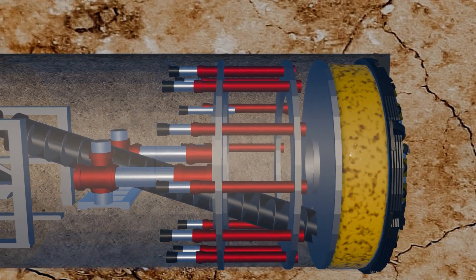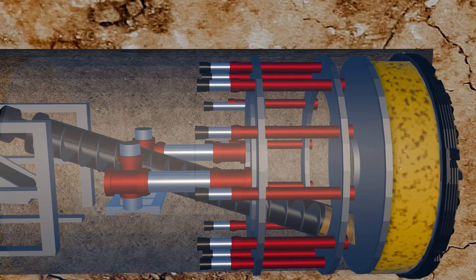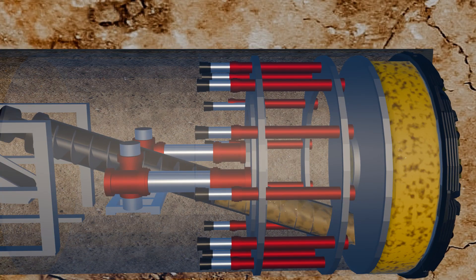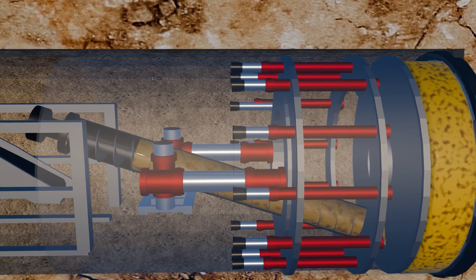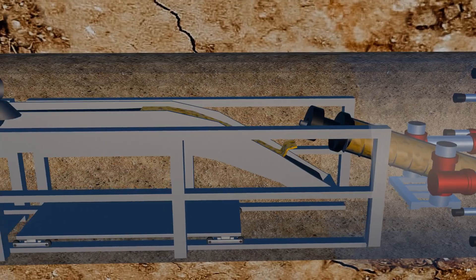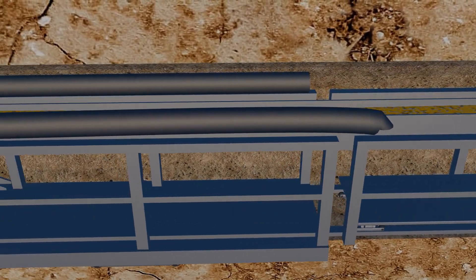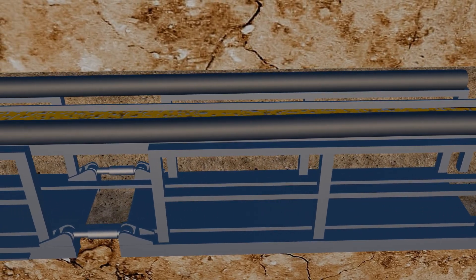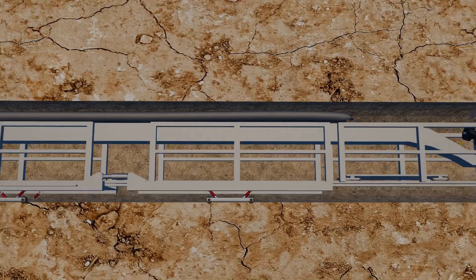When the pressure in the excavation chamber exceeds two bar, the excess chalk marl is removed via the rotary screw conveyor. This waste is then transported to a conveyor belt, which carries it to the machine's exit, where it is finally loaded onto trucks and trains for disposal.